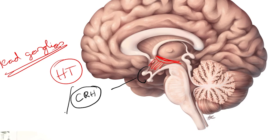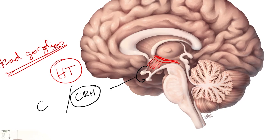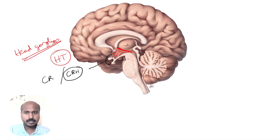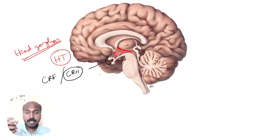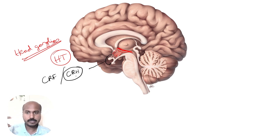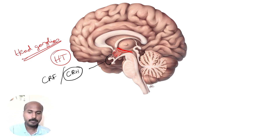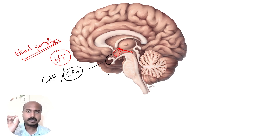CRH is also known as corticotrophin releasing factor. It is called corticotrophin releasing hormone because it makes the pituitary release another hormone. Releasing hormones and inhibiting hormones are characteristic secretions of the hypothalamus.